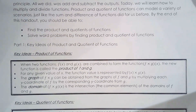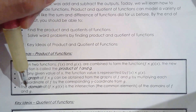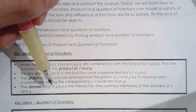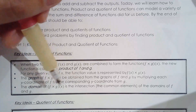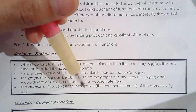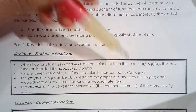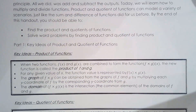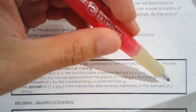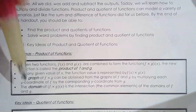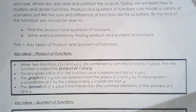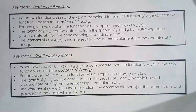Just like last time, the domain of the product of f and g can be found by looking at the intersection — the common elements — of the domains of f and g. So if you know the domain of f and you know the domain of g, you should be able to determine the domain of the product of f and g.